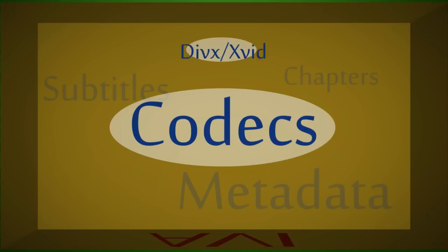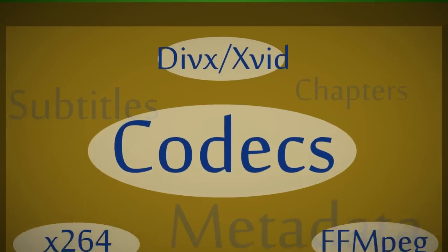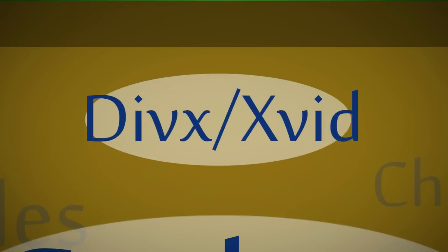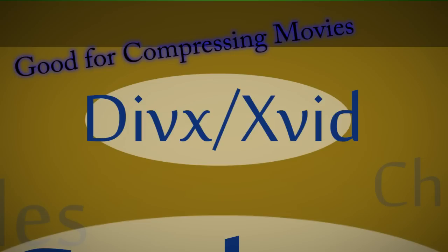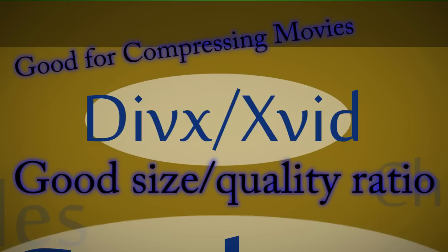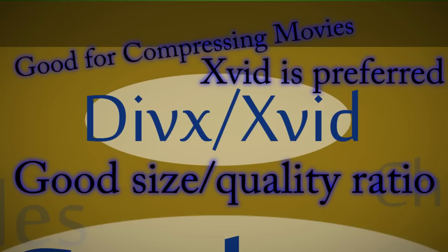Here are the most common types of codecs. The first type is DivX and XVID. DivX is a codec created by the DivX Corporation, and XVID — which is DivX spelled backwards — is its freeware competitor. These codecs are preferred for compressing movies for computer playback due to their size-to-quality ratio, generally being able to compress an entire movie down to about 700 megabytes. Of the two, XVID is more preferred not only because it's the only one that can be used in a Unix environment, but also because it has slightly better quality.